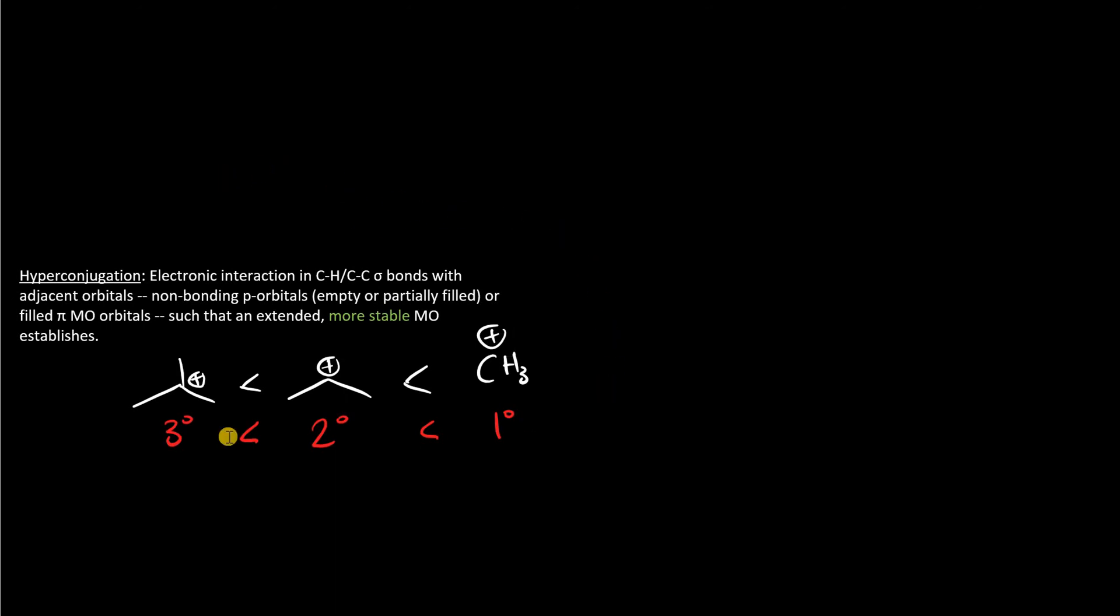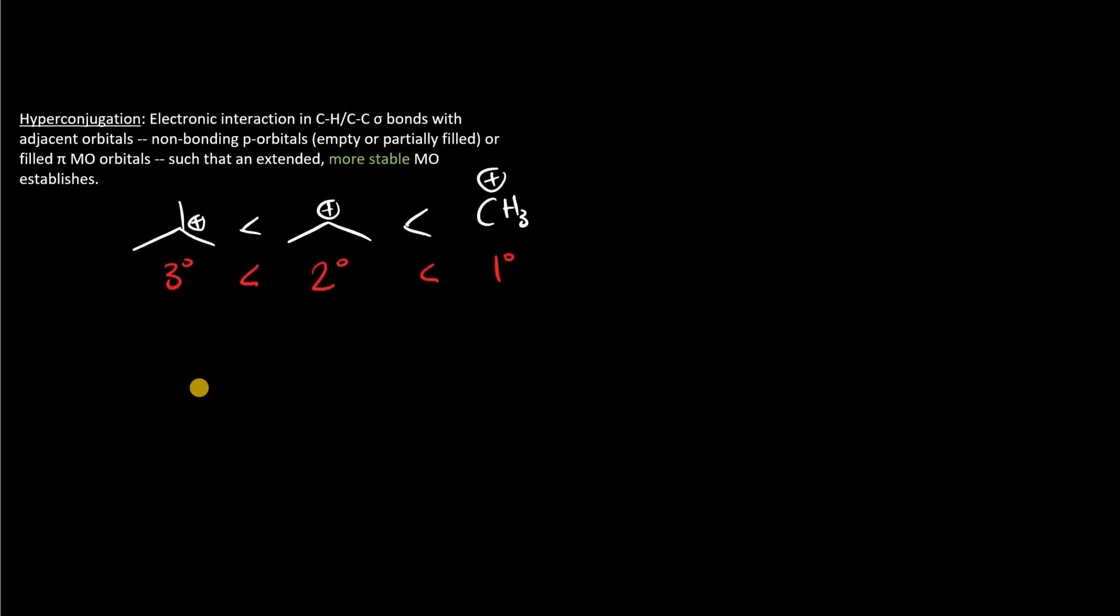It's this electronic interaction between this greater amount of substitution that stabilizes the positive charge. And here's why. If we draw out this tert-butyl carbocation, we'll put the positively charged carbocation in the center. It's bound to a methyl group on the right and two other methyl groups towards the left.